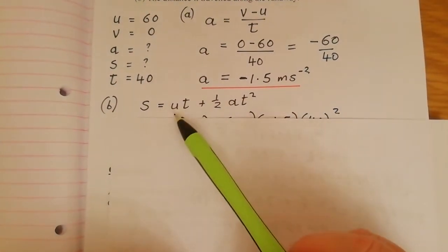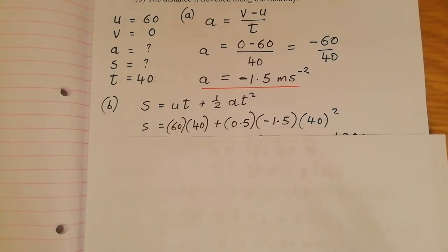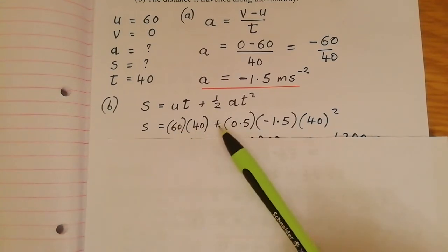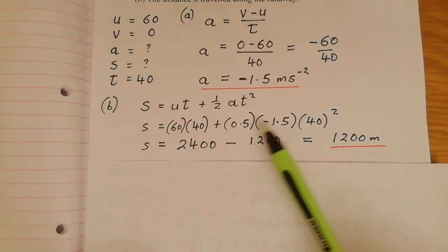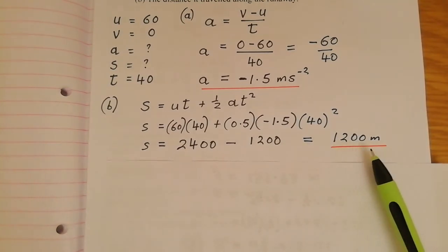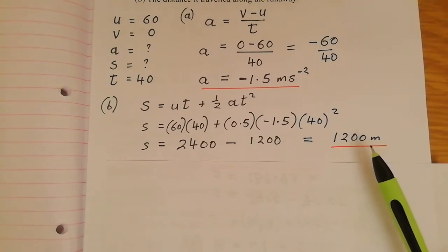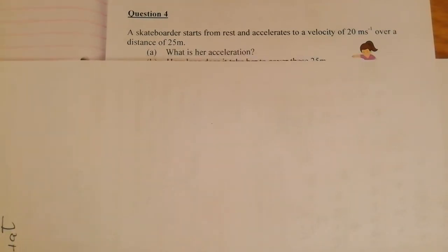For the distance, I use s = ut + ½at². Substituting in: u is 60, t is 40, a is −1.5. So s = (60 × 40) + (0.5 × −1.5 × 40²) = 2400 − 1200 = 1200 metres. The plane takes 1.2 kilometres to stop. This is actually based on a question about a plane landing in Farranfore — and Farranfore airport runway is 2000 metres, so the plane lands quite safely.